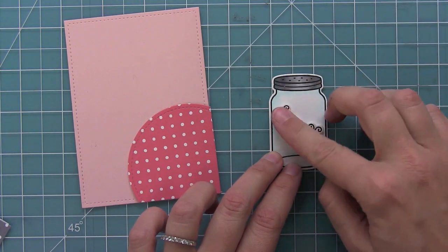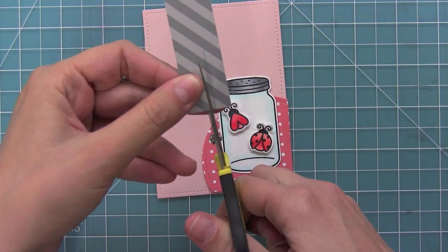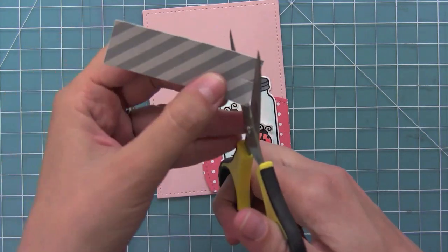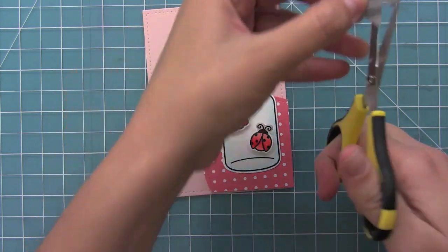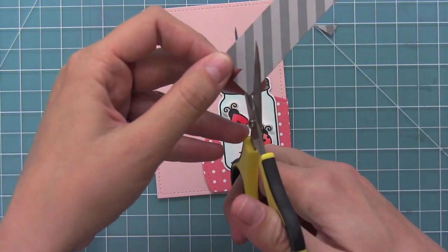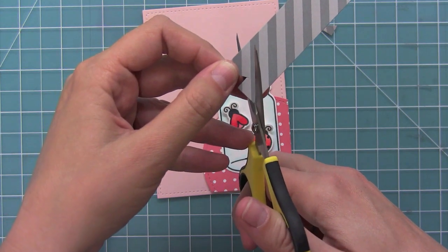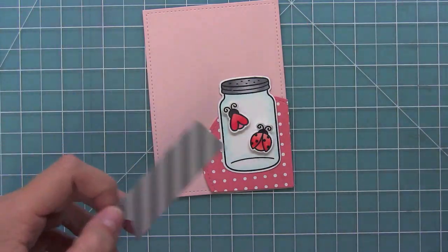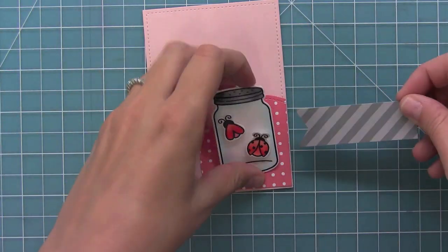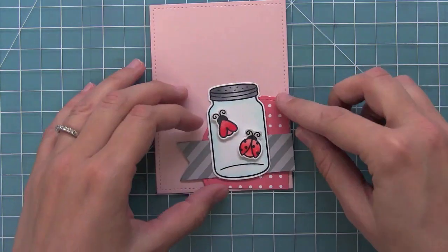Now I've gone ahead and added my cute little bugs with some foam adhesive in my jar, but I thought they kind of looked like they were floating on that circle. So I decided to take some of the hippo color from the Let's Polka collection and just cut a little flagged end on this piece here, and when I put that there on the card you'll see that now the jar looks a little bit less like it's just floating in space down there.